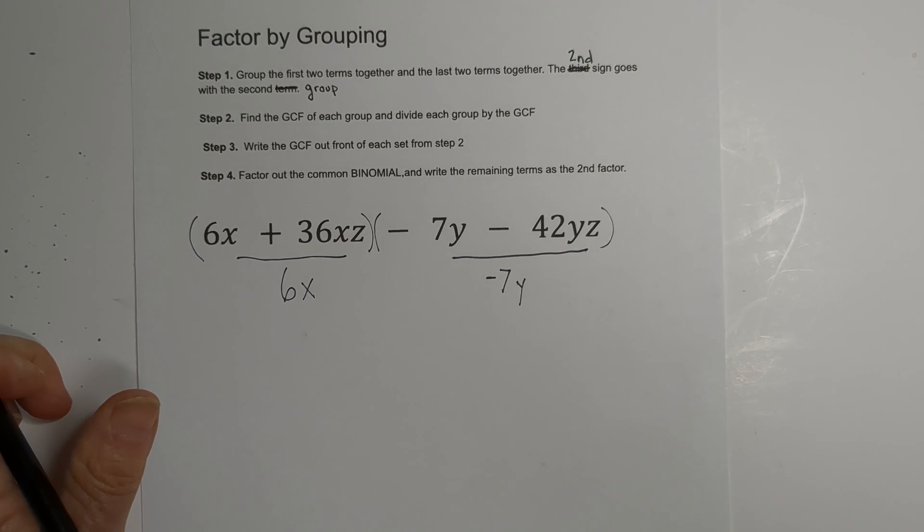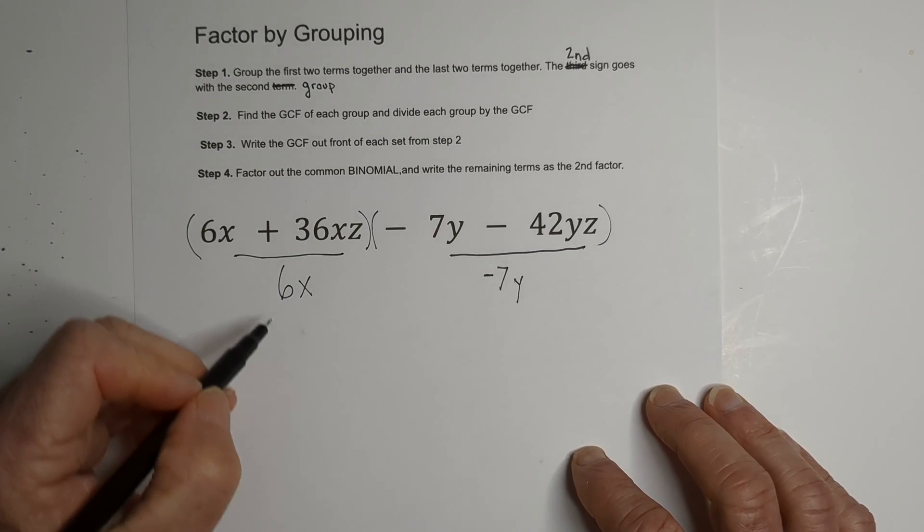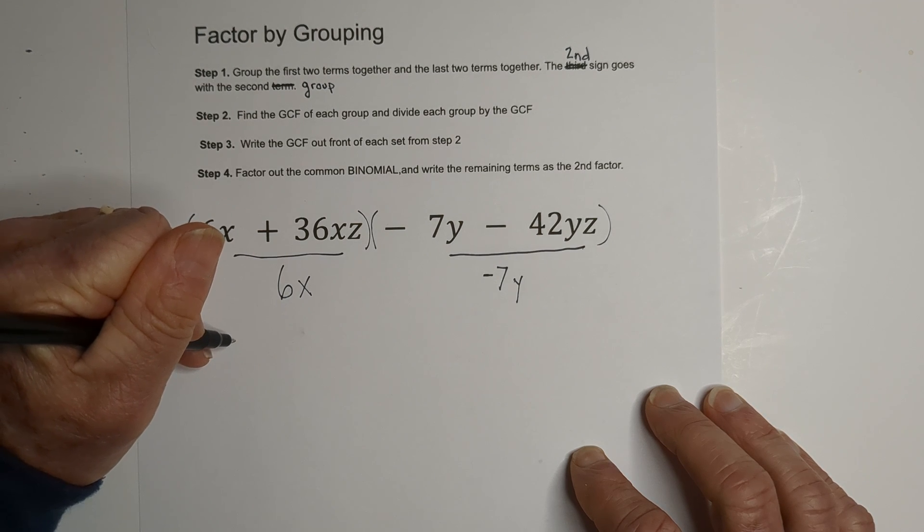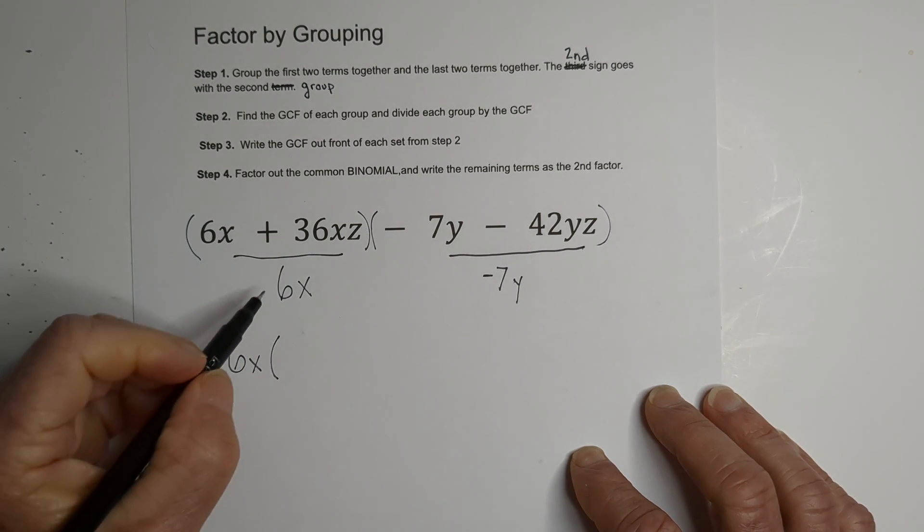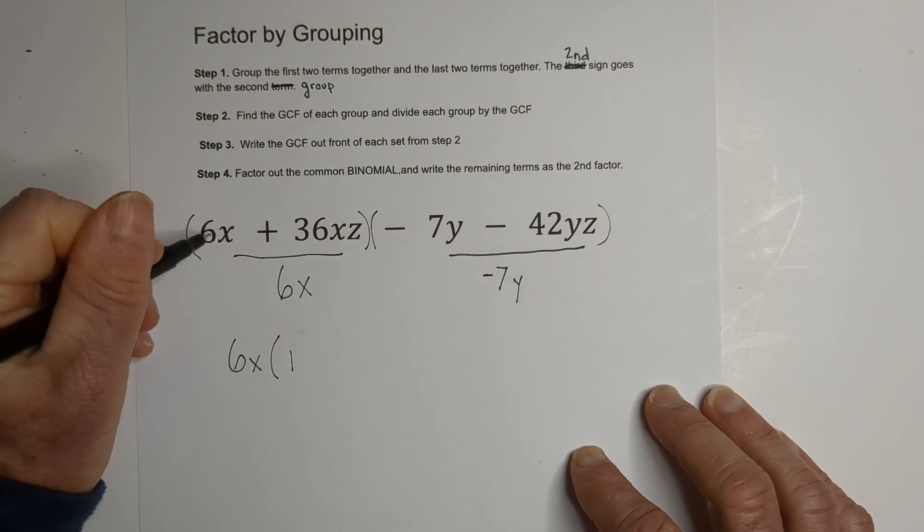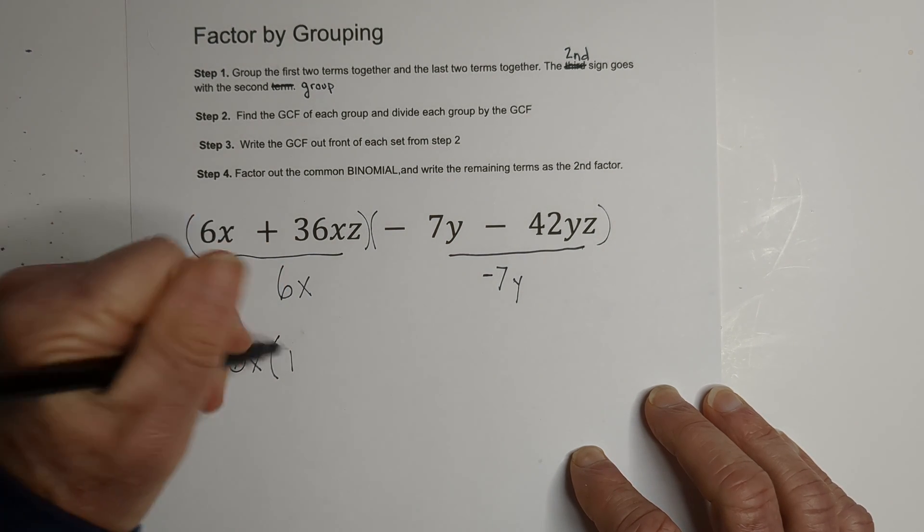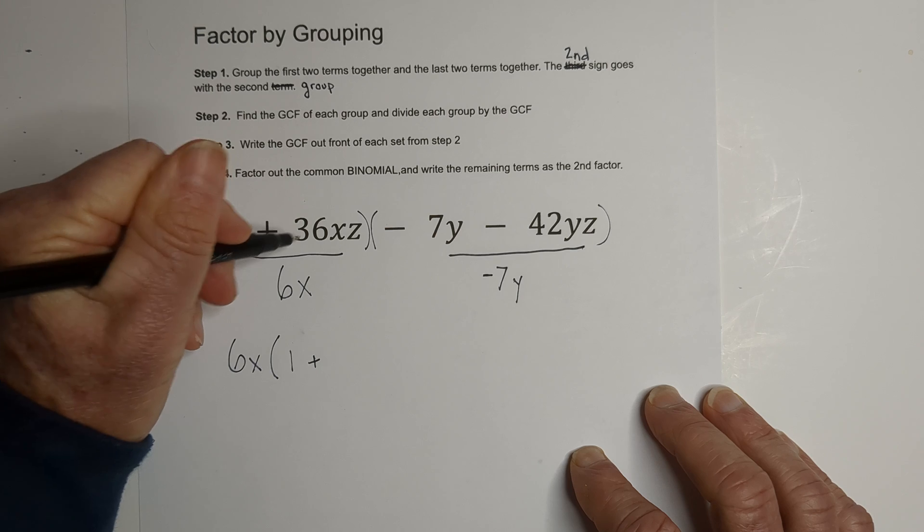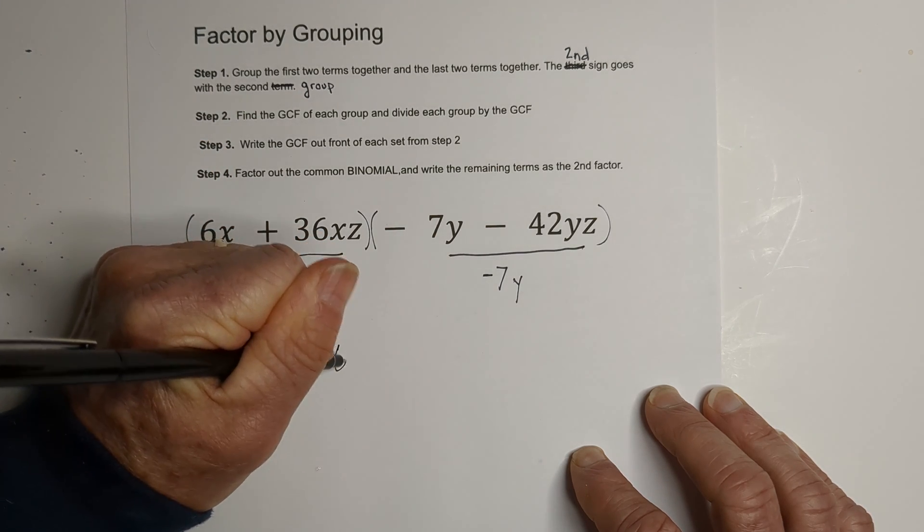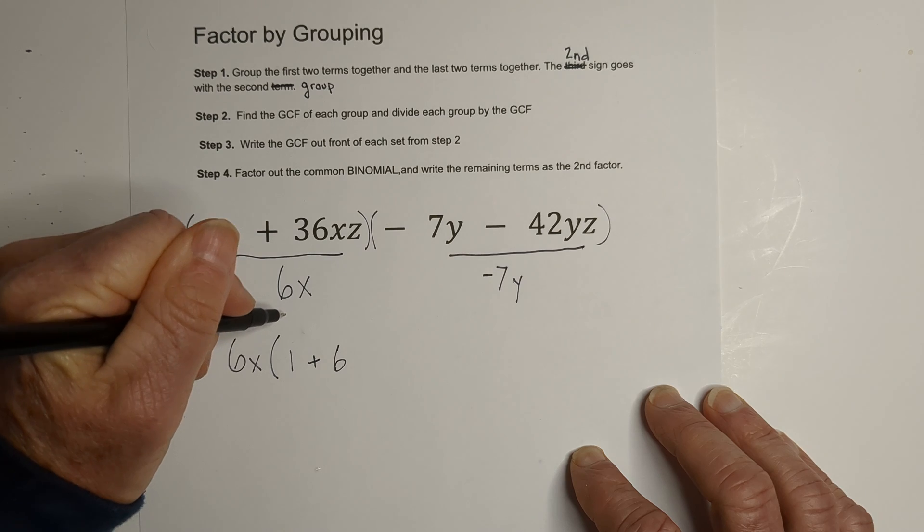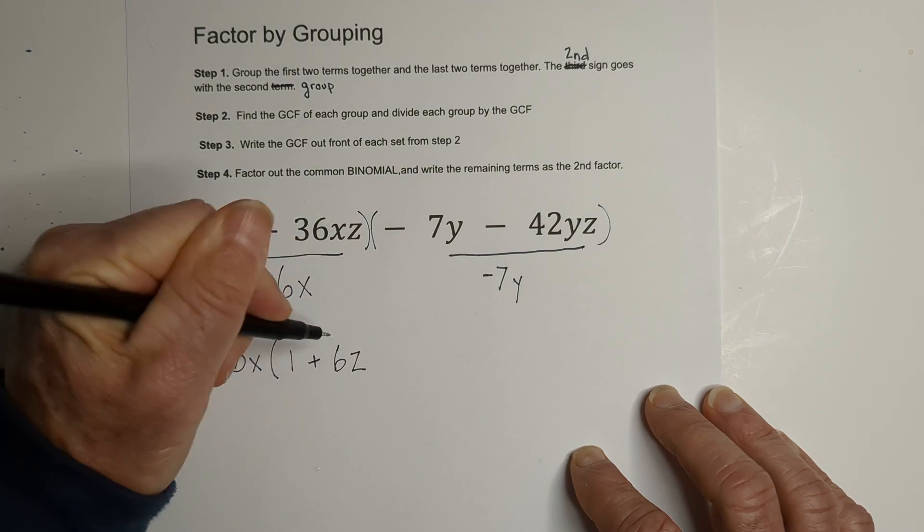Now let's start dividing. So like step three, let's place this out front, and now let's start dividing. This becomes 1, 6x divided by 6x is 1, plus 6 goes into 36, 6 times, and the x's cancel out, and that gives us a z.